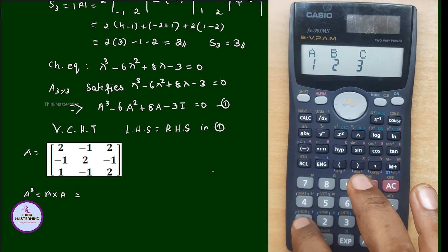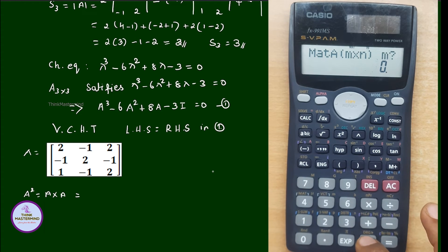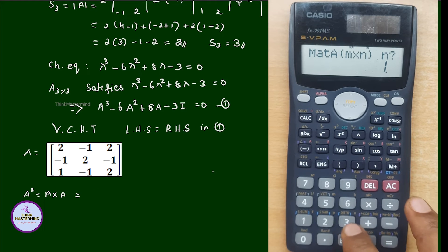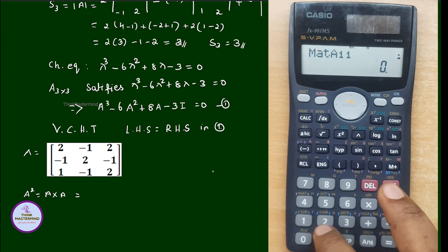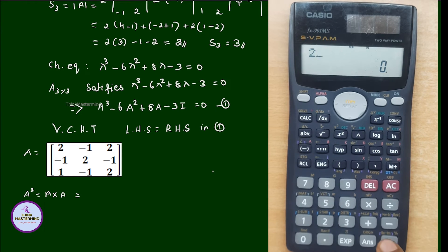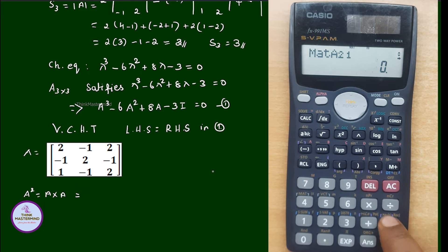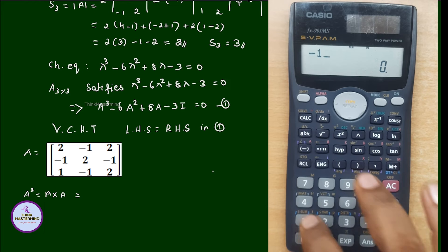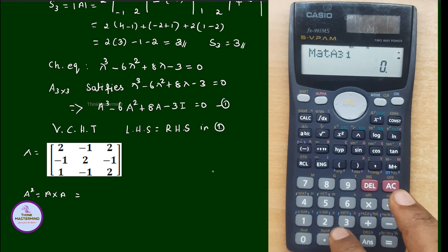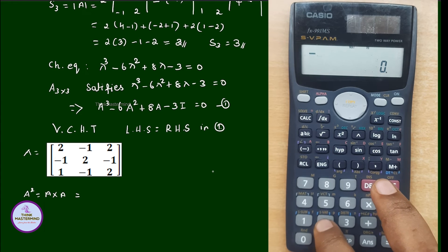I am selecting matrix A and entering the dimension as a 3 by 3 matrix, so M equals 3 and N equals 3. Now entering the values: A11 equals 2, next entry is minus 1, A21 is minus 1, A22 is 2, A23 is minus 1, A31 is 1, and A32 is minus 1.